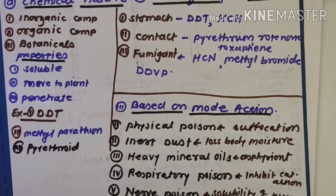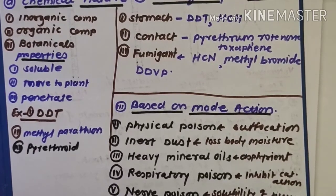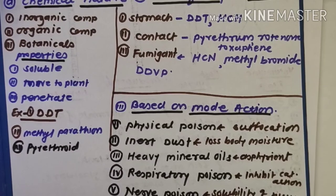These are the three important subclasses of insecticides: the first according to chemical nature, the second based on mode of entry, and the third based on mode of action. Insecticides are chemical compounds used to protect crops from insects by killing them, preventing their attacks, repelling insects, and killing mitigating insects — ultimately enhancing crop yield.